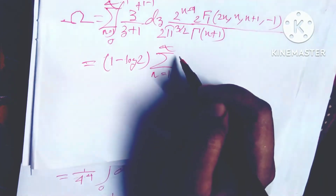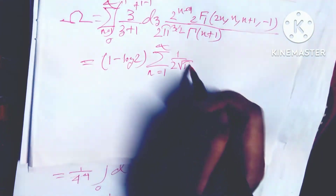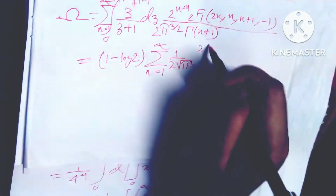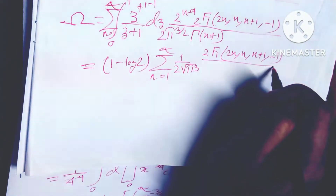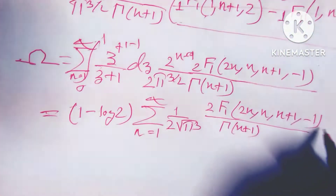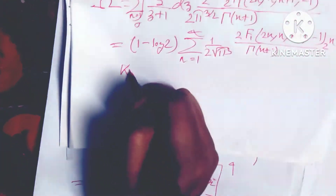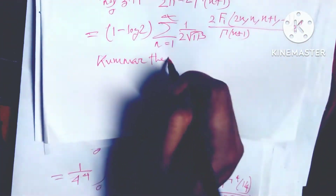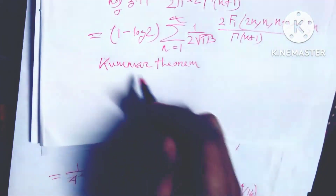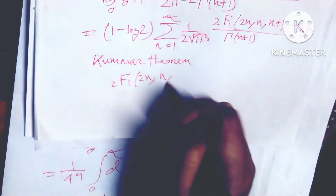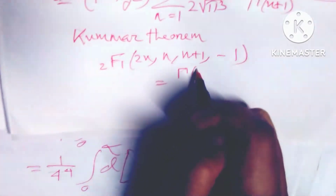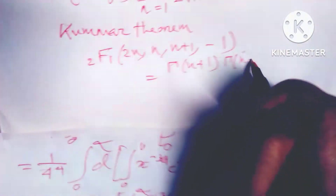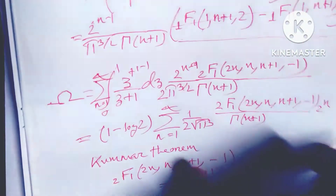After that, summation n equals 1 to infinity: 2 to the power (1/2), root of pi cubed, 2 root of pi, pi cubed, ₂F₁(n, n; n+1; -1), divided by gamma(n+1), times 2 to the power n. Using Kummer's theorem, I apply: gamma(n minus 1) divided by gamma(2n+1), divided by gamma(2n+1).